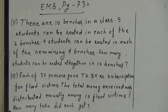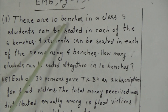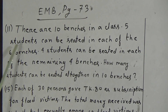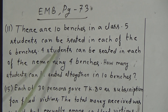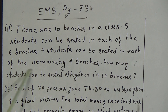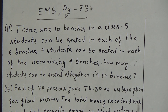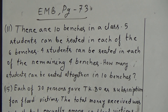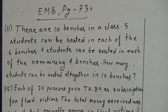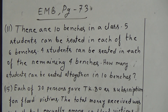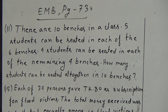Here the question is: there are 10 benches in a class. 5 students can be seated in each of the 6 benches. 4 students can be seated in each of the remaining 4 benches. How many students can be seated altogether in 10 benches? Among 10 benches, in case of 6 benches, 5 students can be seated in each bench. That means in 6 benches, total 5×6 = 30 students can be seated.